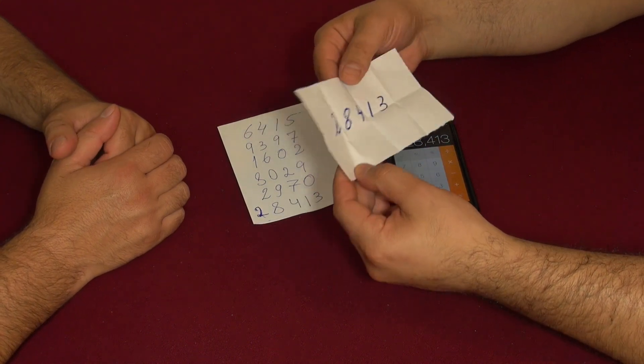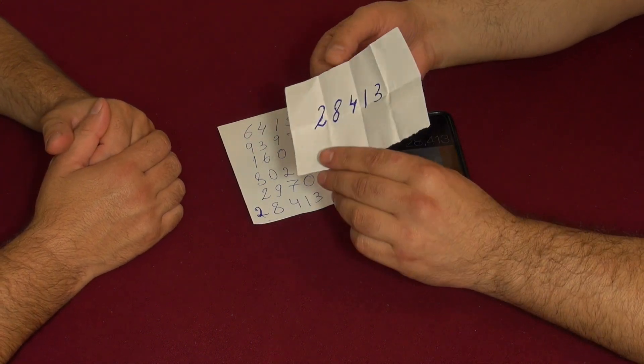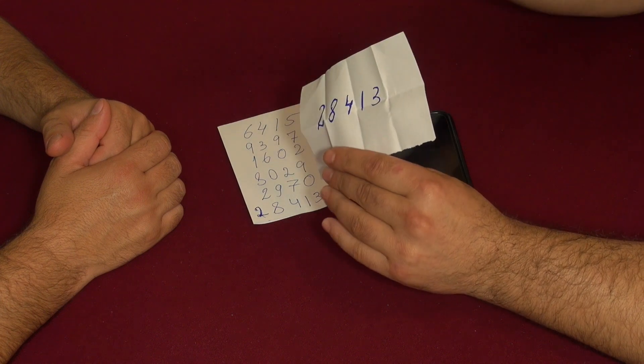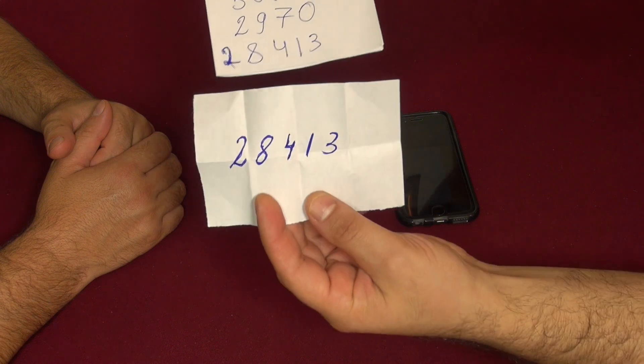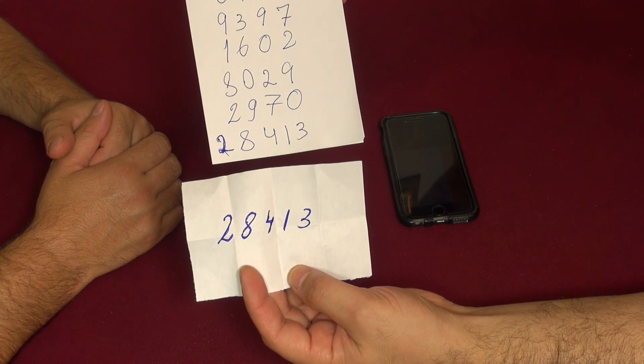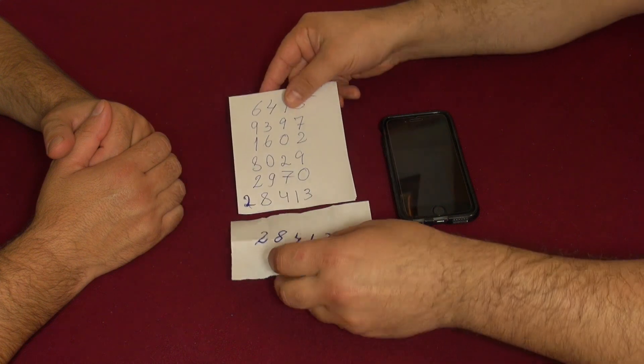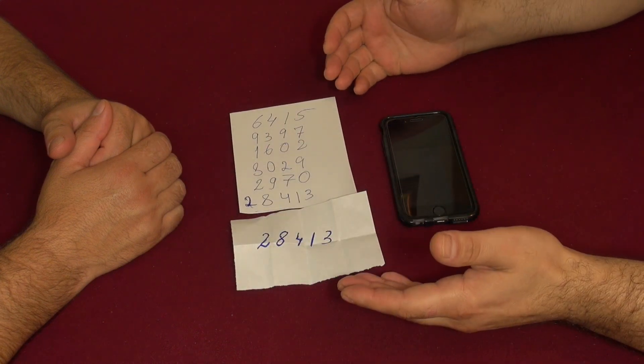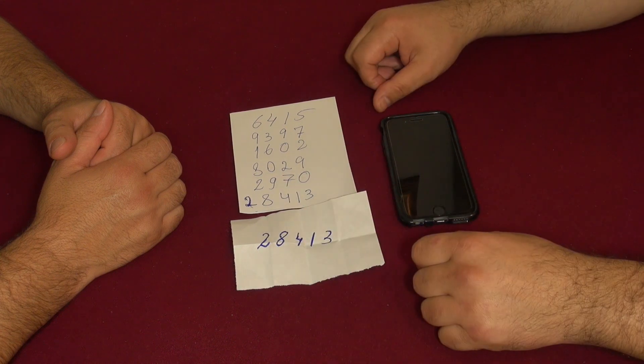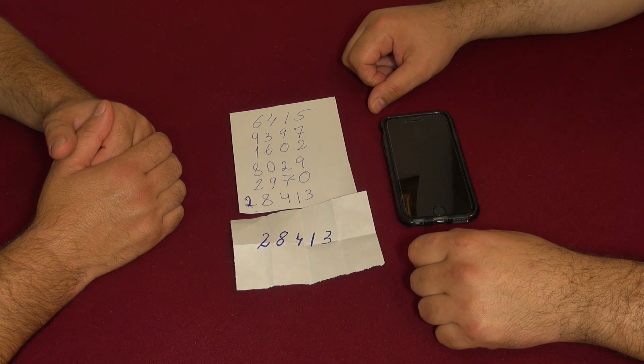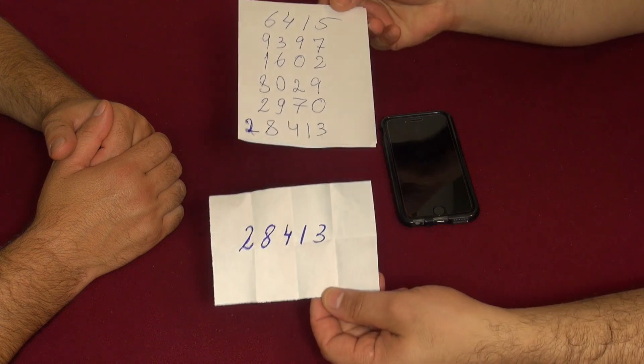So I knew the number right before we started the trick. It's 28413. So how is it possible? How could I possibly know the total number if I didn't know what numbers you would write? Isn't it great? It's amazing. So this is an amazing trick, guys.